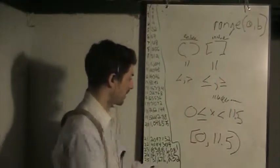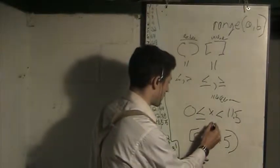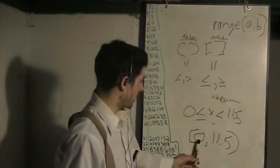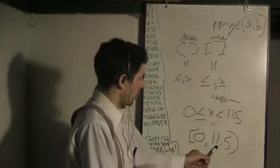These two are equivalent. These two are equivalent explanations. They're equal. This means zero, including zero, all up to 11.5.